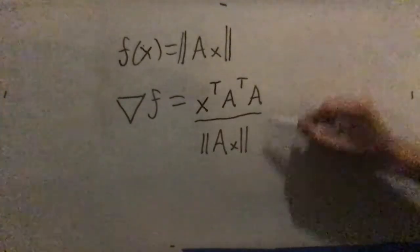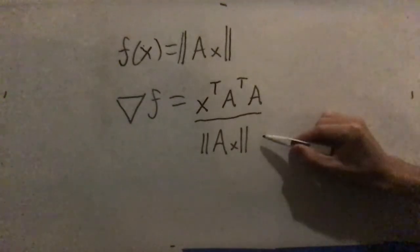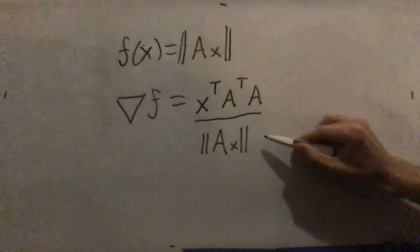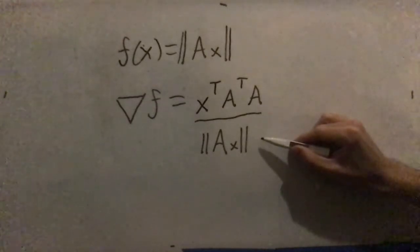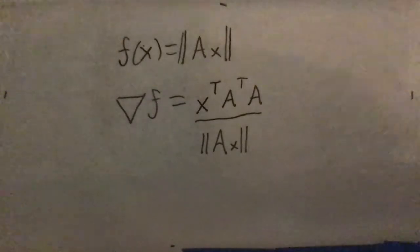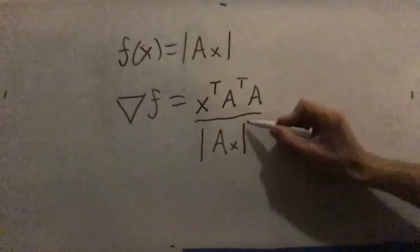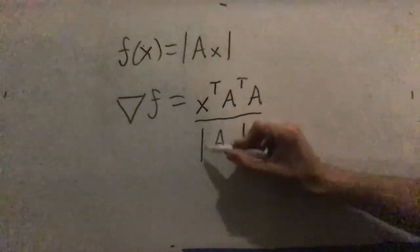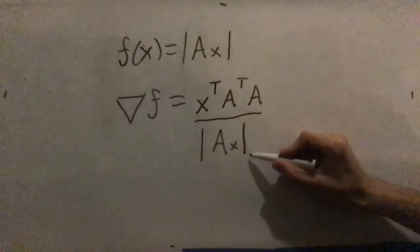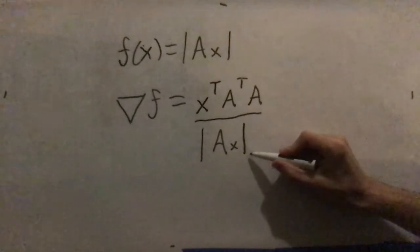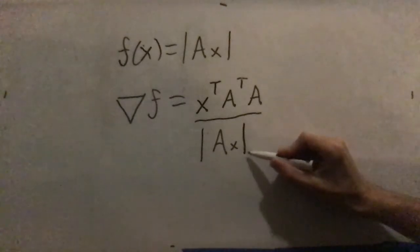It turns out this is the answer, but we'll go through a few derivations, starting with an intuitive visual derivation. For the rest of the video, I'm just going to use single bars instead of double bars to mean length, just to save space and time.